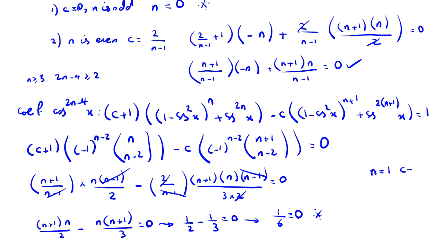We have proved: for n=1 (c=0) it is okay, for n=2 (c=2) it is okay, and for n ≥ 3 all are invalid. So the complete answer is n=1 and n=2. This fully solves problem 6 of the Harvard MIT Mathematics Tournament team selection 2022.